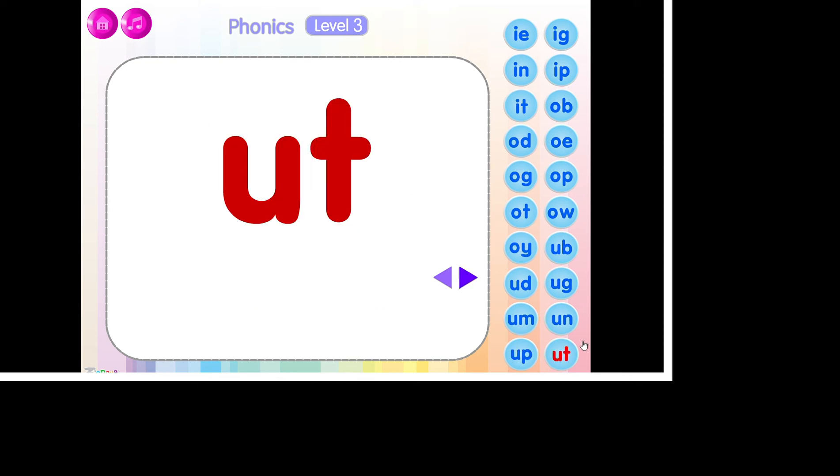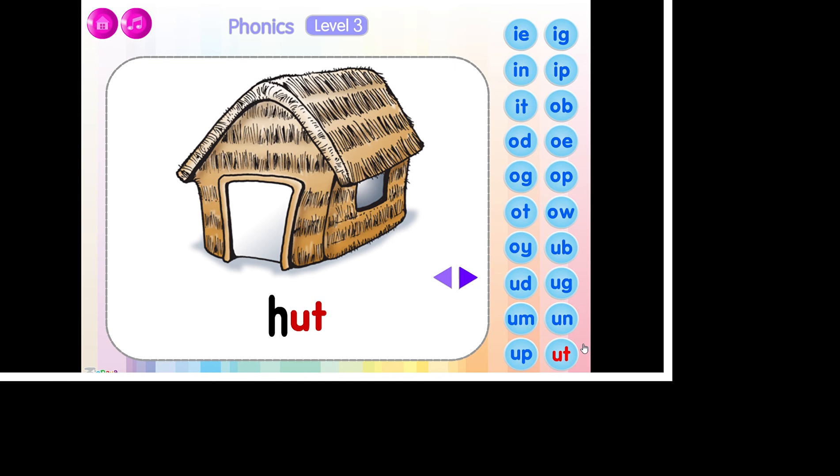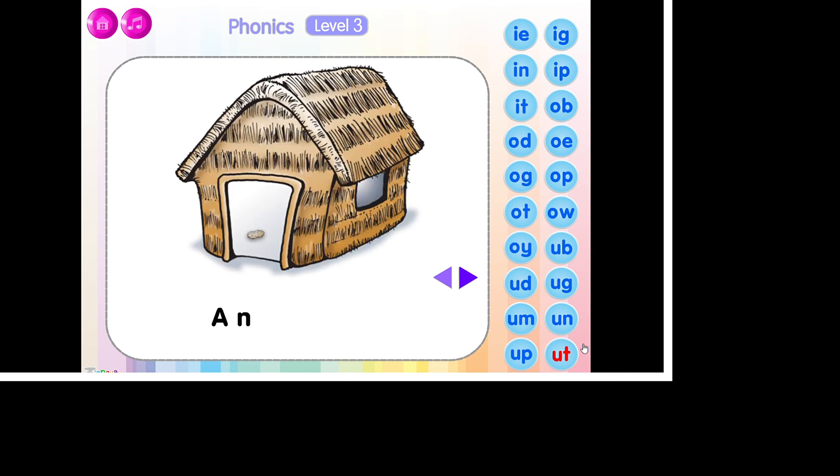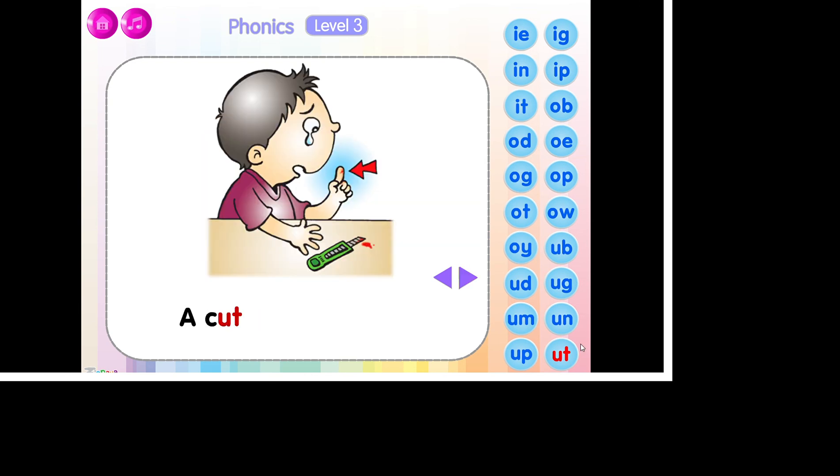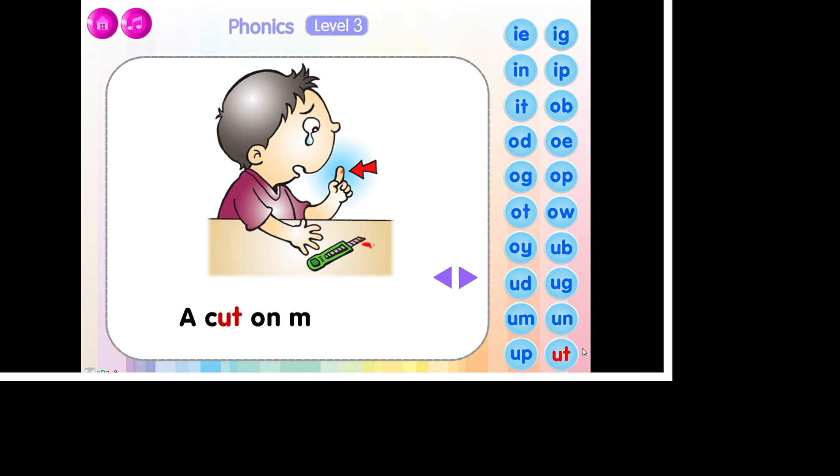The sound of ut is ut. N-U-T, nut. H-U-T, hut. C-U-T, cut. A nut in a hut. A cut on my finger.